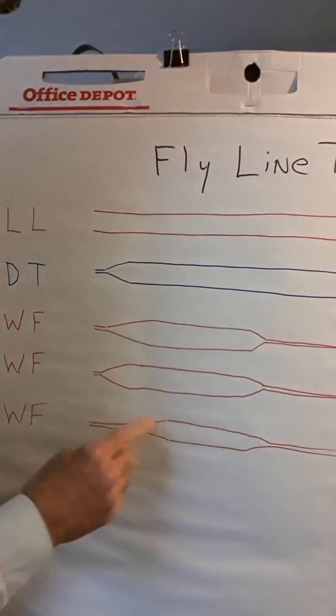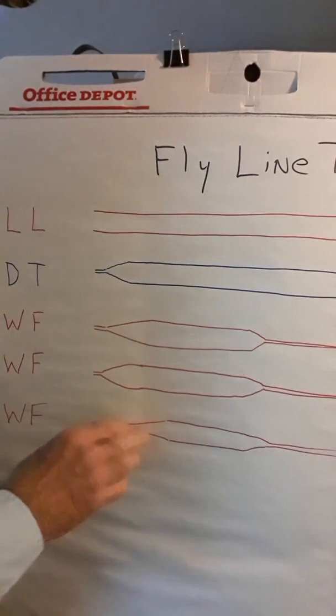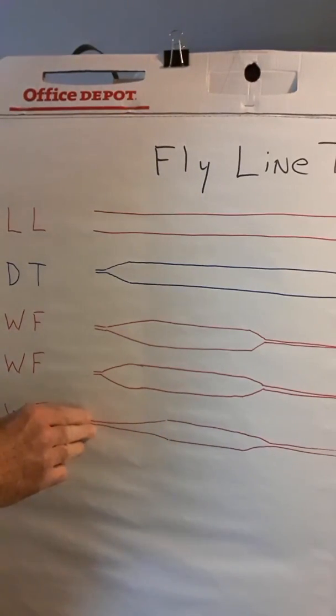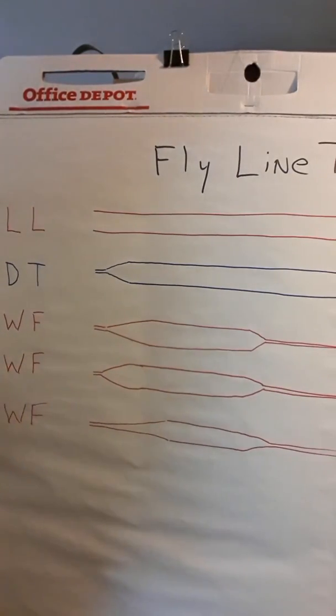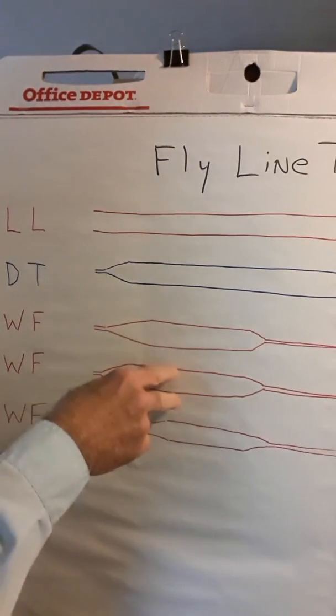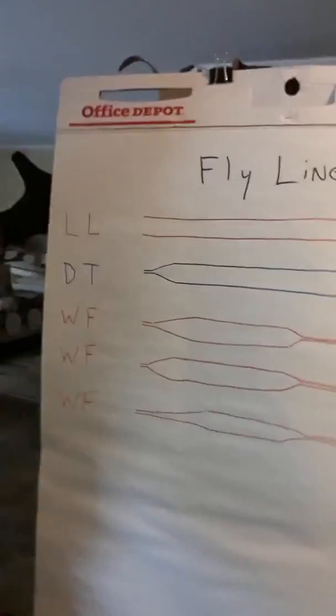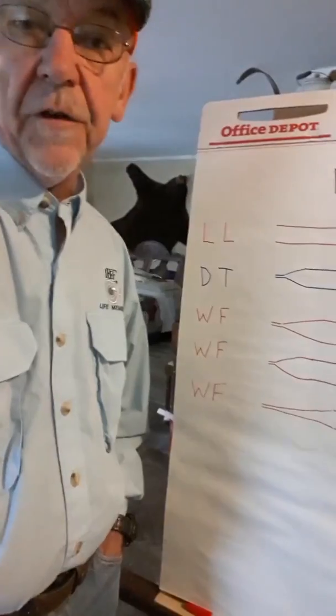So now you see that there's different tapers in the front part of the heads of these lines. The ones with long narrow tapers are good for delicate fly presentations. The ones which come very quickly to the butt section, the front of the fly line retain its energy more for turning over big plugs. I hope this helps you in deciding which fly line is best for your fishing conditions.